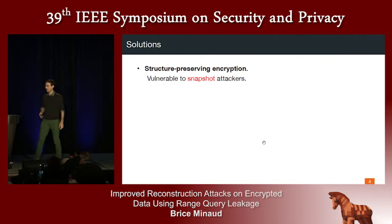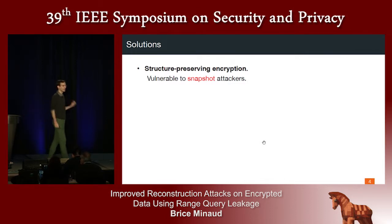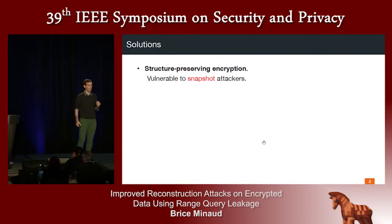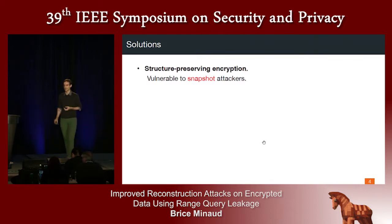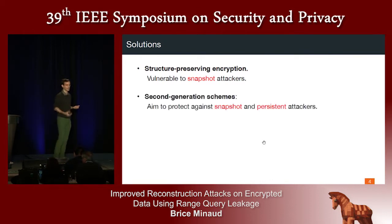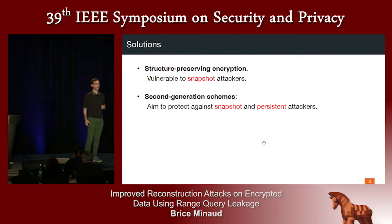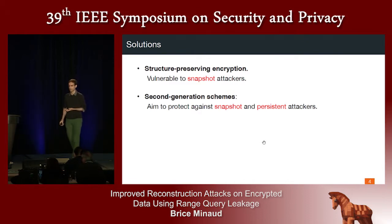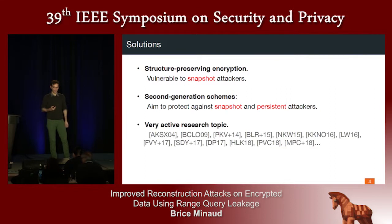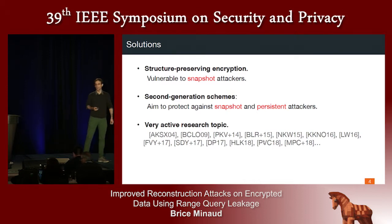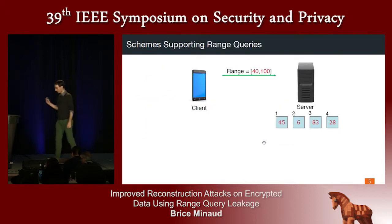In this space there are already a number of solutions. You might have heard of structure-preserving encryption — for example, order-preserving encryption or order-revealing encryption — which could be considered first-generation solutions. If you've heard of them, you might also know they are pretty broken. As a result, there have been second-generation schemes that attempt to give meaningful guarantees against snapshot and persistent attackers, and this is currently a very active research topic — we've just seen some examples in that space.